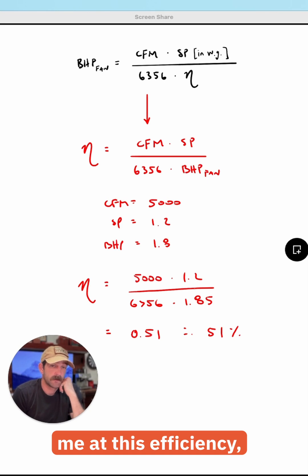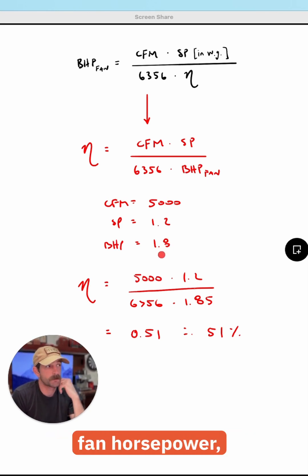And this tells me at this efficiency, our brake horsepower is 1.8. Then our overall fan horsepower, motor horsepower is going to be closer to four, maybe even five when it comes down to the final selection.